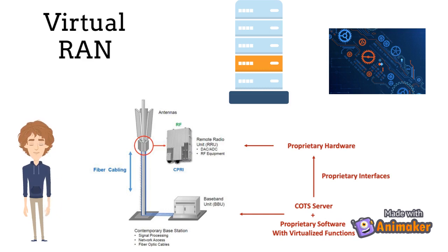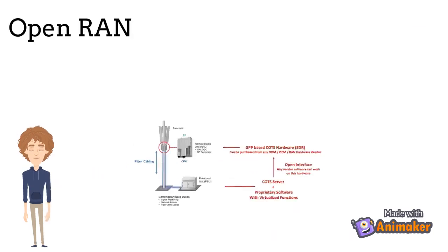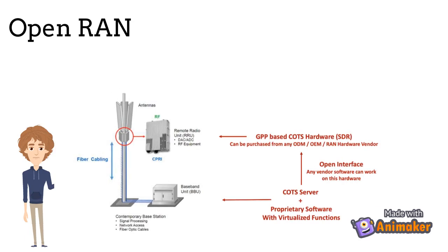What was done in hardware can now be done in software, which reduces entry barriers into the market. The DU and CU are effectively computers running software. Instead of using custom hardware, they can now be virtualized and run on any cloud server, as long as it is near the base station to reduce latency. Open RAN is to disaggregate hardware and software and to create open interfaces between them.